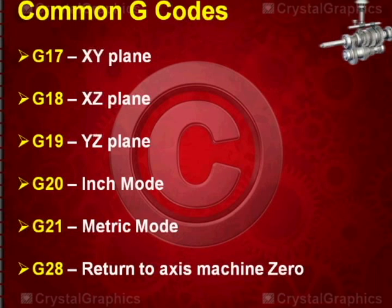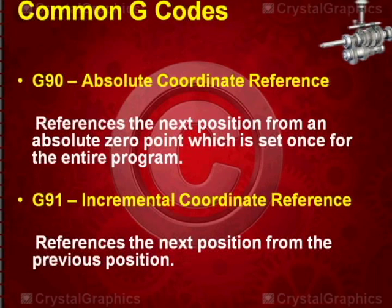G28 indicates return to the axis machine zero. G90 is absolute coordinate reference, which references the next position from an absolute zero point set once for the entire program. G91 is incremental coordinate reference, which references the next position from the previous position.